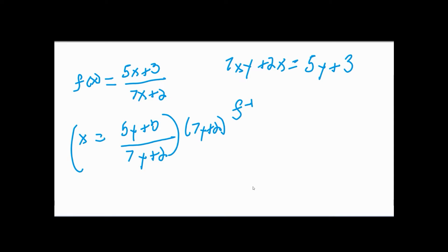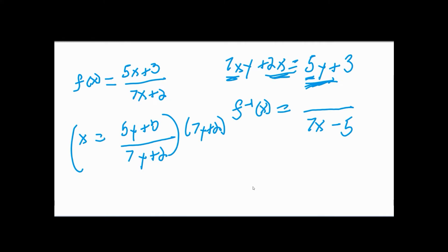Now I'm ready to write the answer using the shortcut. I want everything with y on the left, so the 5y and 7x terms change signs. Everything being multiplied by y makes the denominator: 7x - 5 (sign of 5 changes). The terms without y form the numerator with sign changes: -2x + 3. So f⁻¹(x) = (-2x + 3) / (7x - 5).